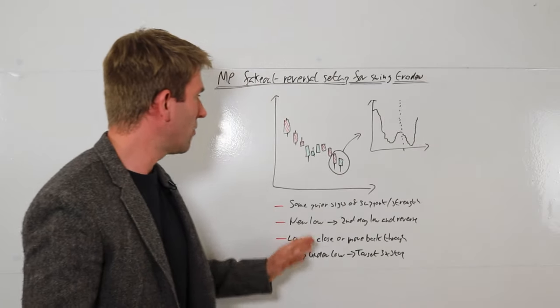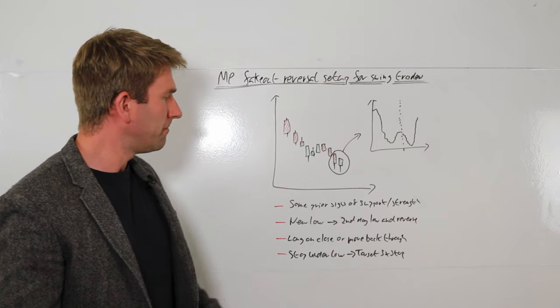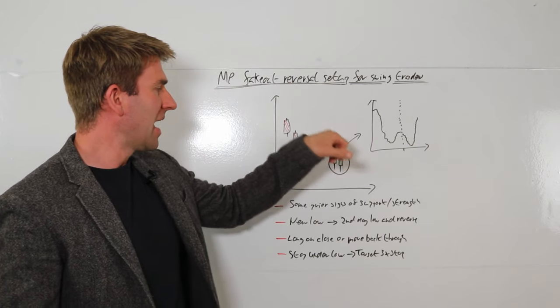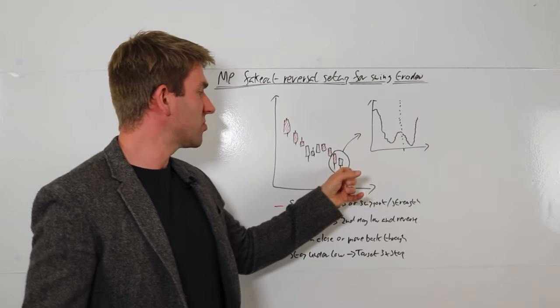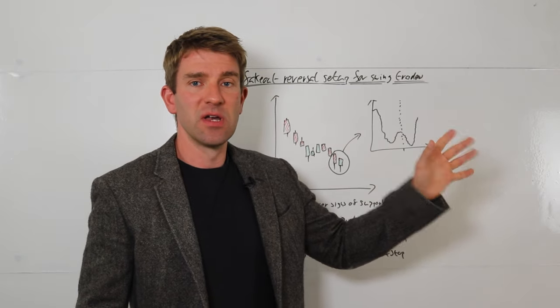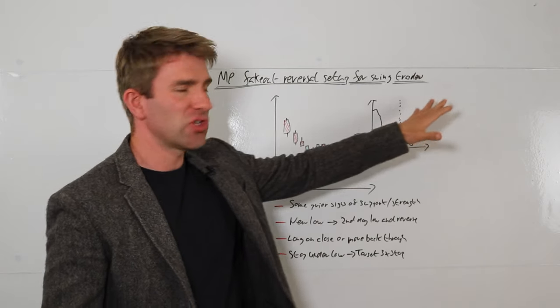So what are the rules? What we're looking for here is some kind of move lower, we get a low put in, and the second day we break the low, it does a fake out type situation and then reverses. Now there's some key rules that we're interested in with this and we'll look at the intraday chart in a moment.